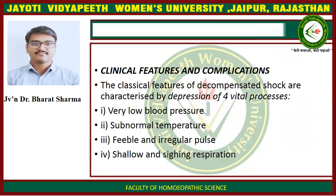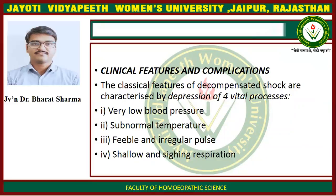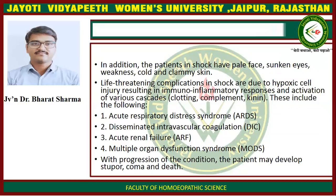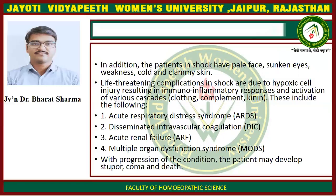Clinical features and complications. The classical features of decompensated shock are characterized by depression of four vital processes: very low blood pressure, subnormal temperature, feeble and irregular pulse, and shallow respiration. Additionally, patients in shock have a pale face, shrunken eyes, weakness, and cold and clammy skin. Life-threatening complications arise from hypoxic cell injury resulting in immuno-inflammatory response and activation of various cascades — clotting, complement, and kinin system — including acute respiratory distress syndrome, disseminated intravascular coagulation, acute renal failure, and multi-organ dysfunction syndrome. With progression, the patient may develop stupor, coma, and finally death.